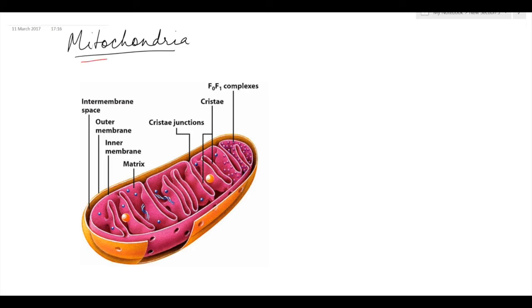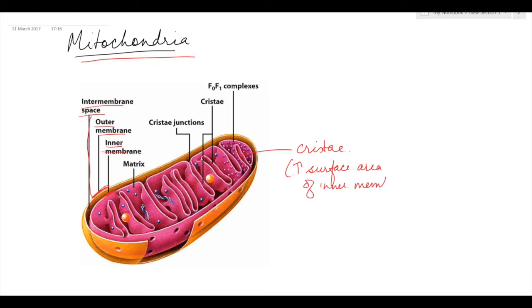Mitochondria is a double membrane structure having an outer membrane and an inner membrane. The inner membrane encloses an intermembrane space. The inner membrane shows infoldings referred to as cristae, which increase the surface area of the inner membrane where the electron transport chain occurs. Present in the inner membrane are the F0F1 particles, also known as the ATPase complexes, where ATP is formed.